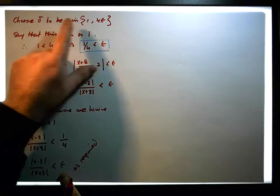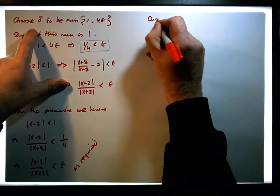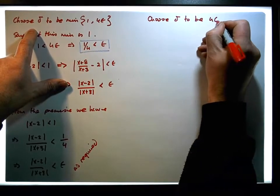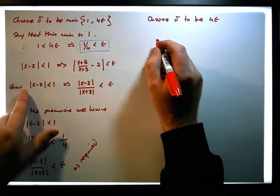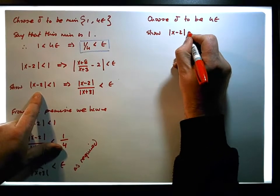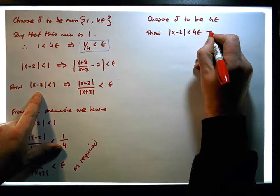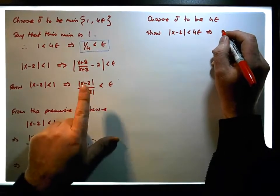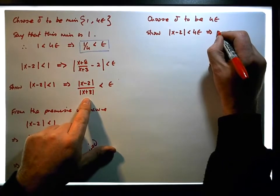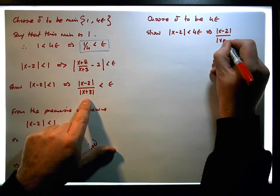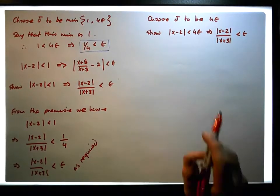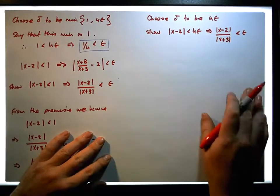Now say we choose delta to be four times epsilon. What we need to do is show that x minus two less than four times epsilon implies — using this version of the absolute value expression — that x minus two all over x plus three has to be less than epsilon.